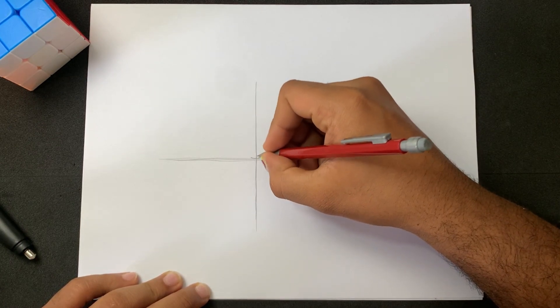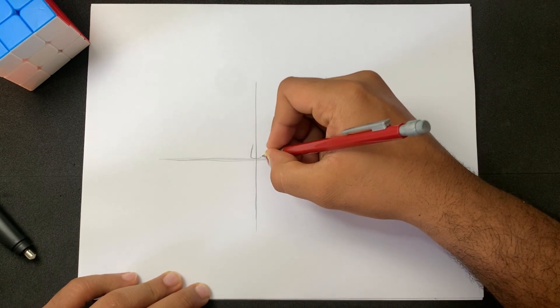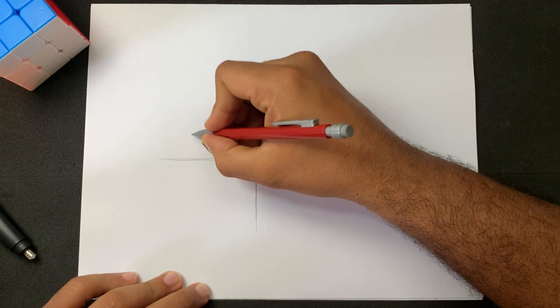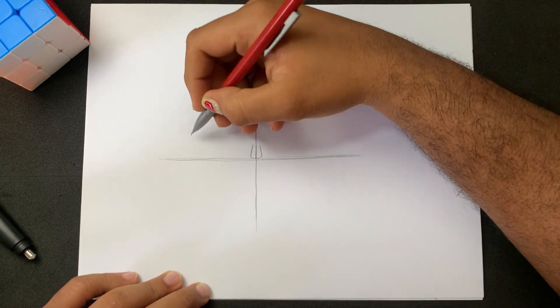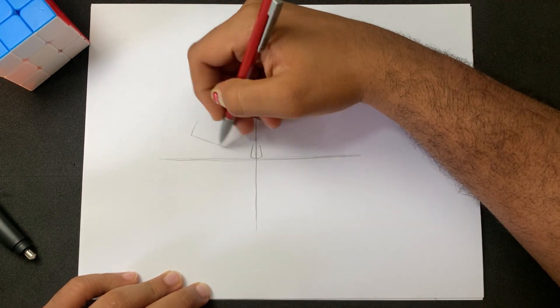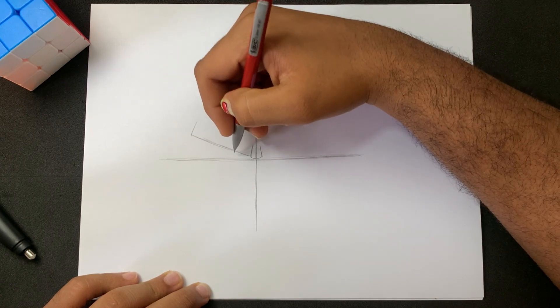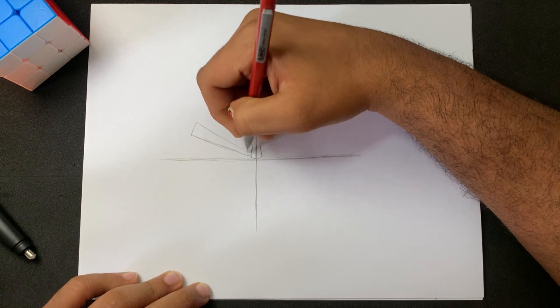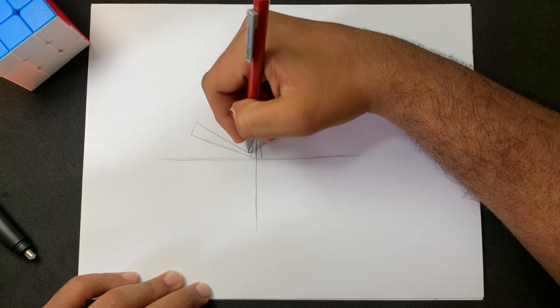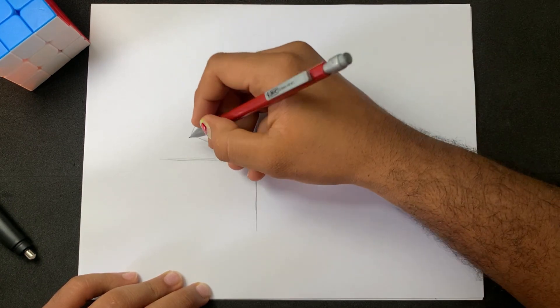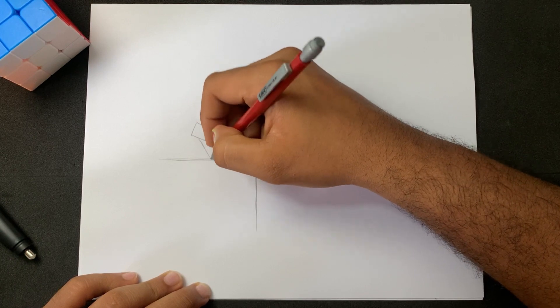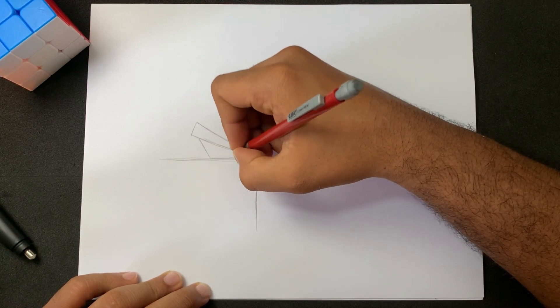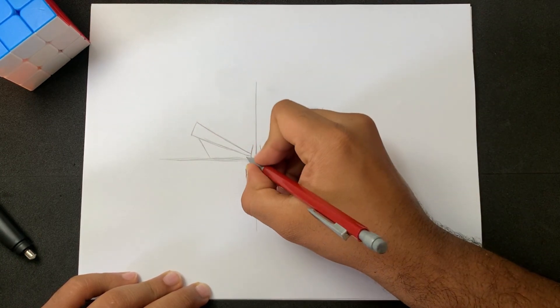First we start by drawing a cross that will help us place the facial features. The distance between the eyes is almost a half of one eye. If you pay attention, drawing the eyes is almost like a triangle, just add some lines.